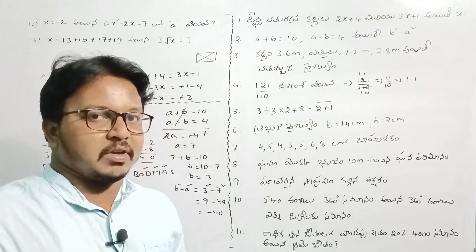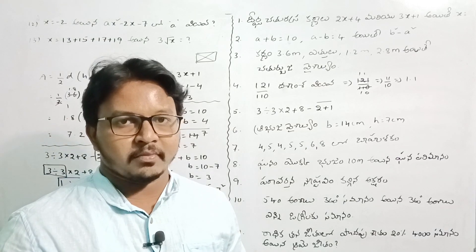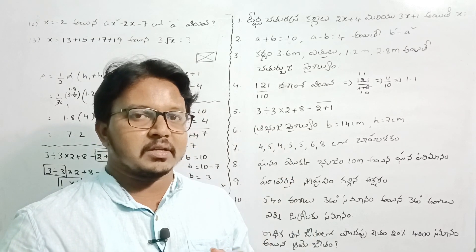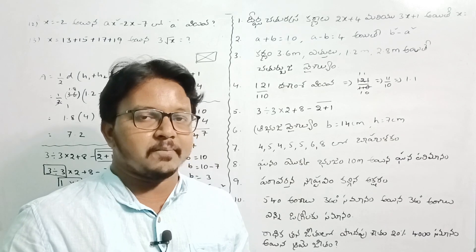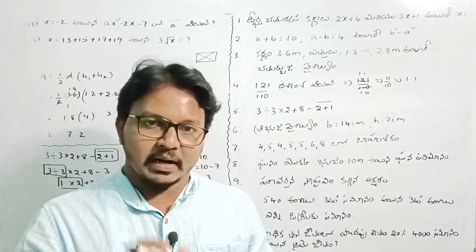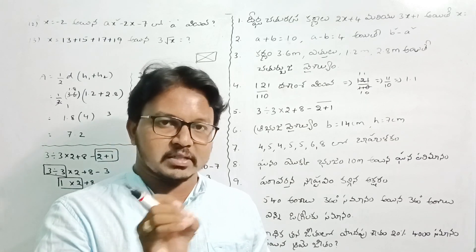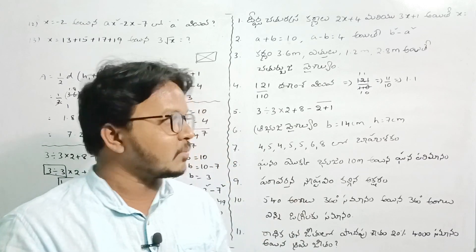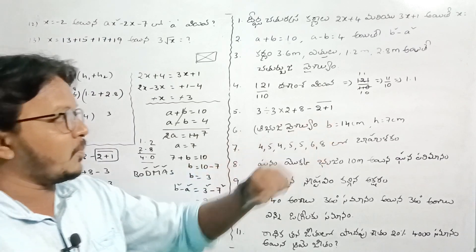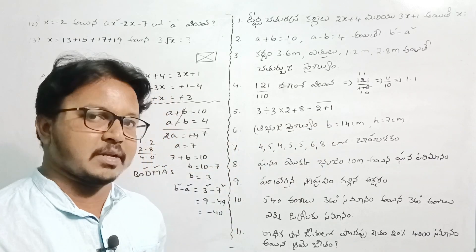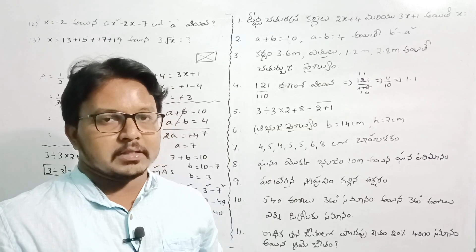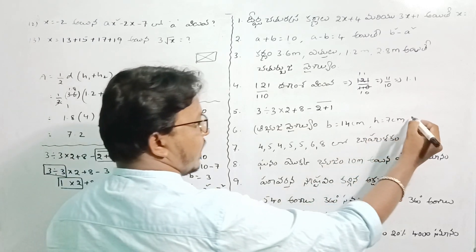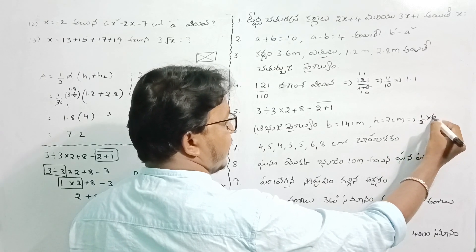So there is a difference between the BODMAS and VBODMAS approach. The difference is that you have a concept from the exam point of view. If you choose a problem, you might take 10 minutes — we will do it in one minute. There is a technique in the channel. If you choose one way, you have a concept. So if you choose one way, b is equal to 14 cm and h is equal to 7 cm. The area of the triangle is simple.